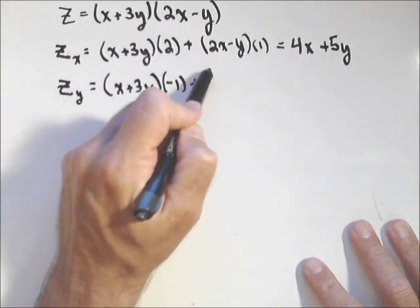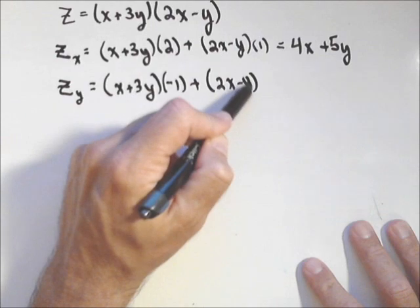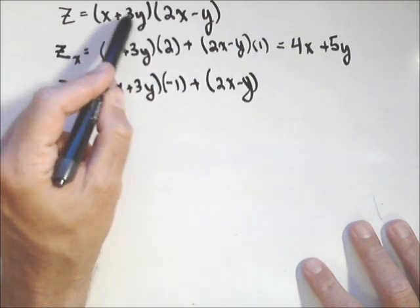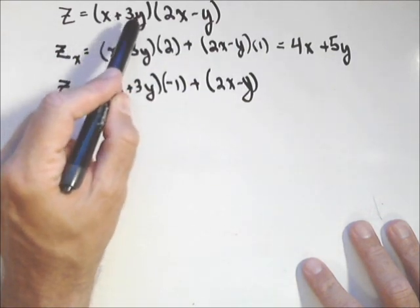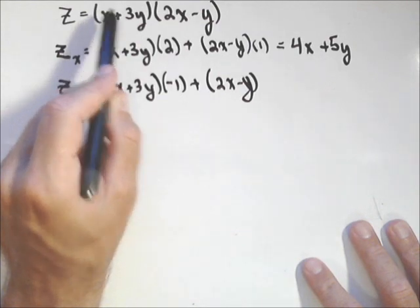Plus, now I'm going to leave this part alone, (2x - y), times the derivative of the first part with respect to y now. So this is a constant, derivative of 3y with respect to y is 3.